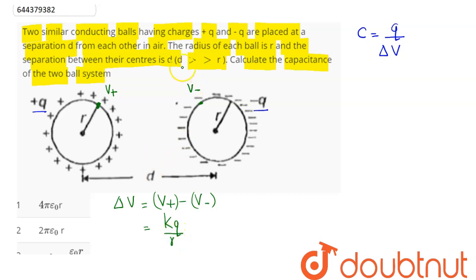And in similar manner we can say here potential on -q charge on its surface will be equal to minus of kq divided by r. Hence this result comes out to be 2kq divided by r.